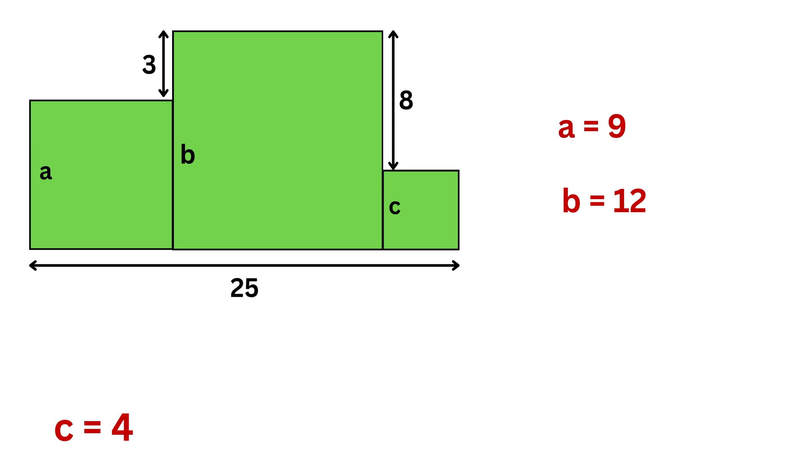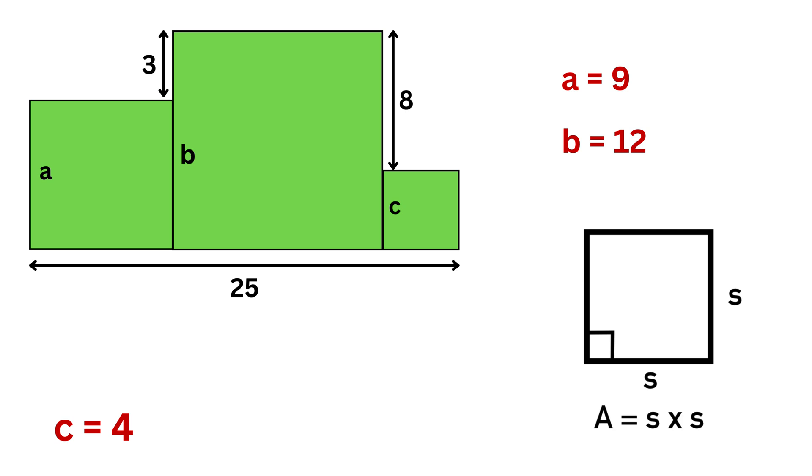Now the last step is to calculate the total area of these three squares. We know the formula for the area of a square is side times side. For the medium square, the area is 9 times 9 which gives 81 square units.